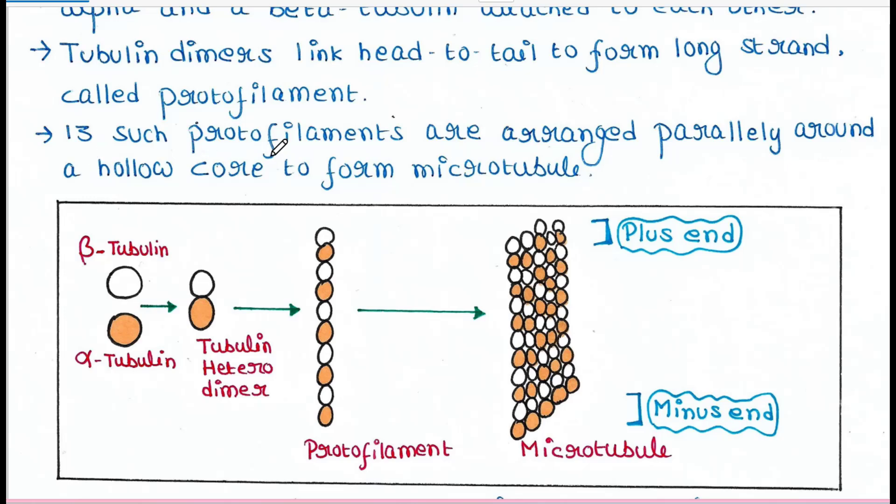Now, 13 such protofilaments are arranged parallelly around a hollow core to form microtubules. So 13 such protofilaments will accumulate around a hollow core to form this microtubule. But here you cannot find 13 protofilaments in my image since this is not a 3D structure. So what is plus end and what is minus end? I will discuss about it in a couple of minutes.